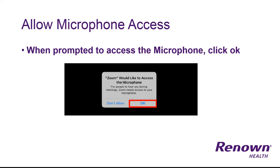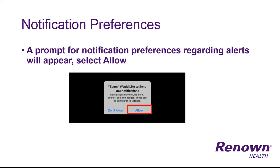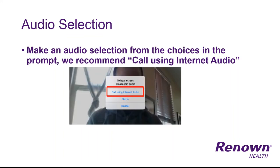A prompt will also appear asking to access the microphone — click OK. Another prompt for notification preferences regarding alerts will appear; go ahead and select allow. You also need to make an audio selection from the choices, but we recommend using call using internet audio.